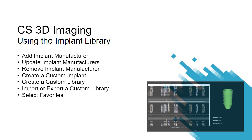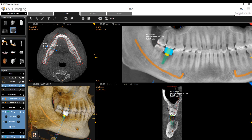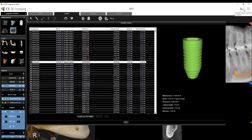By the end of this class, you should be able to: add an implant manufacturer, update implant manufacturers, remove an implant manufacturer, create a custom implant, create a custom library, import or export a custom library, and select favorites. CS3D Imaging provides a library of virtual implants for use on the Curve Slicing tab. You can add and remove manufacturers and import and export custom implant libraries.